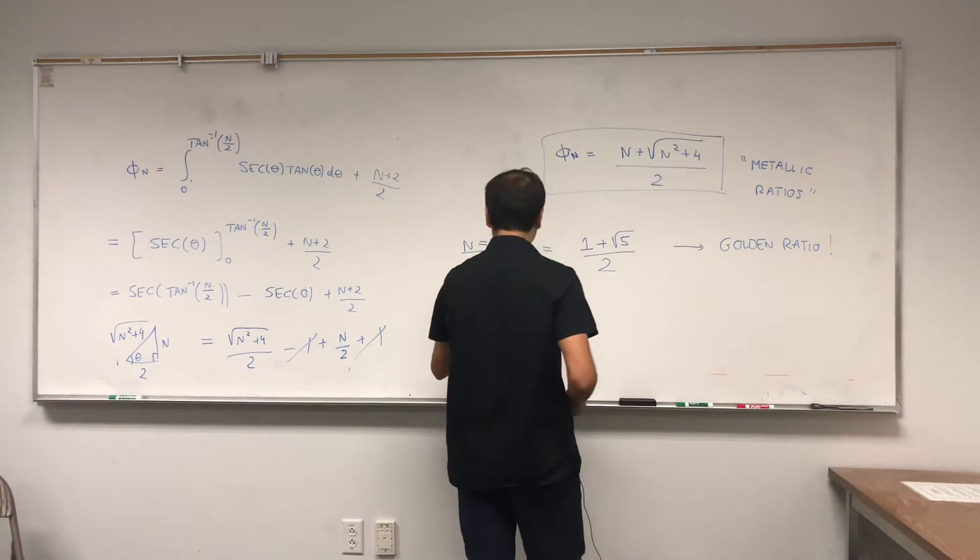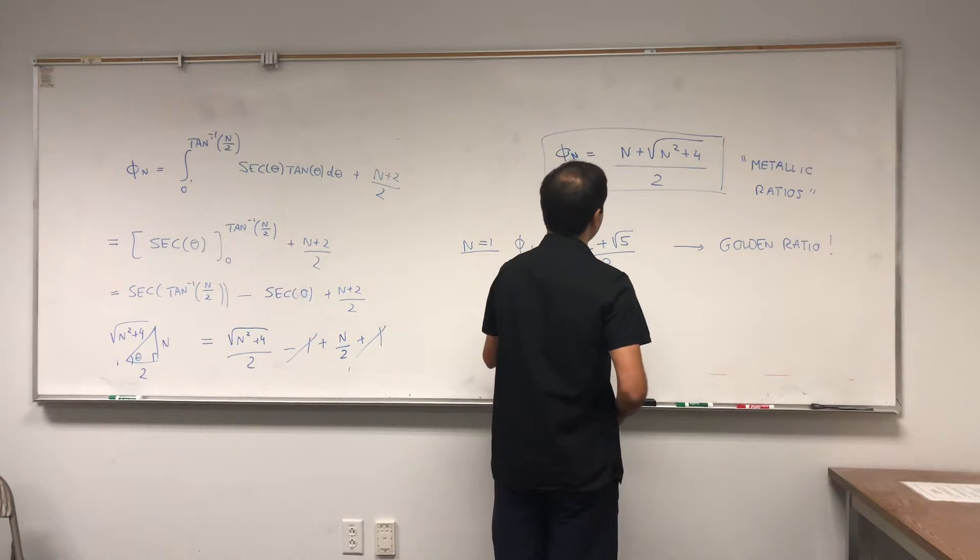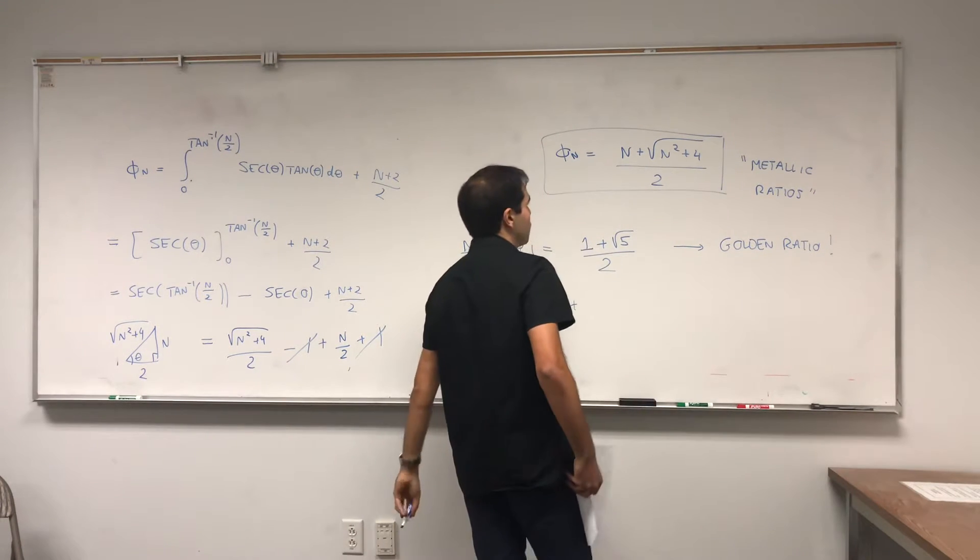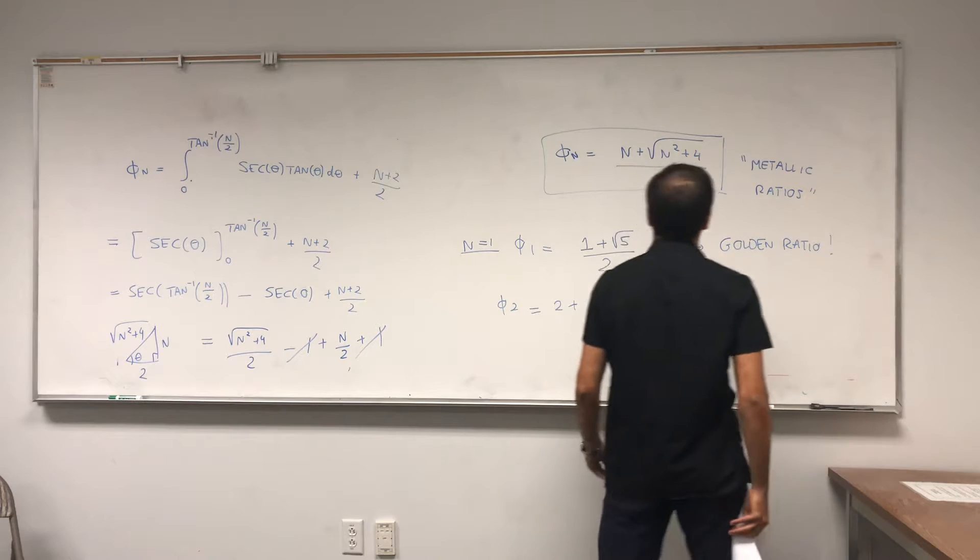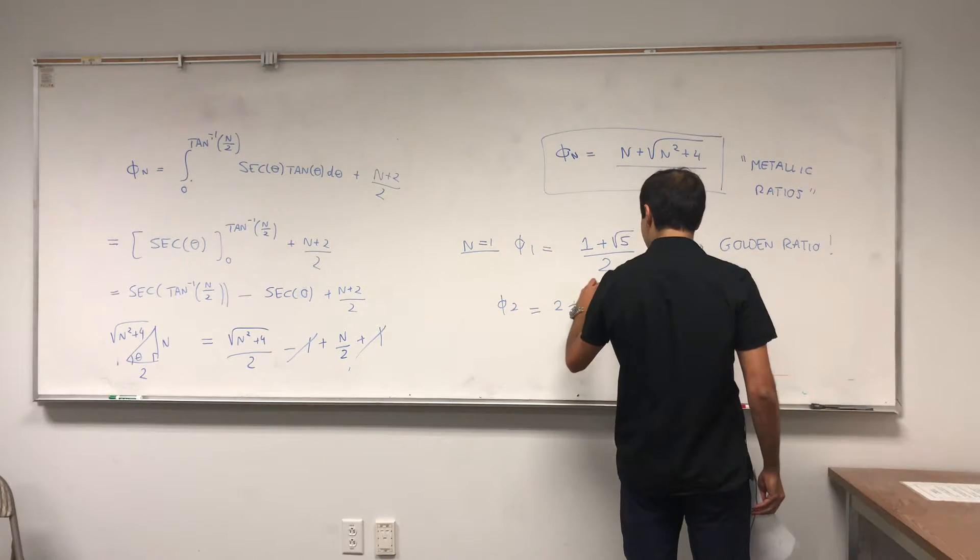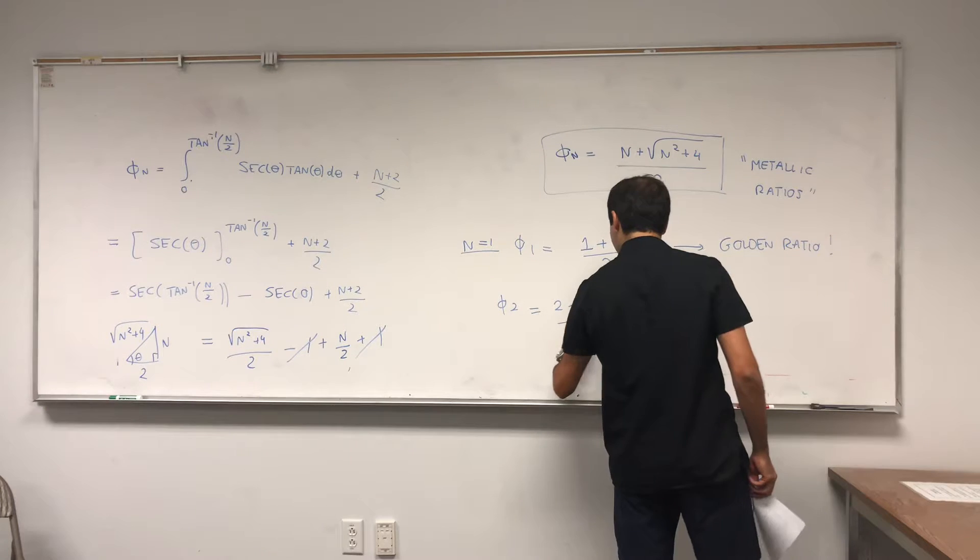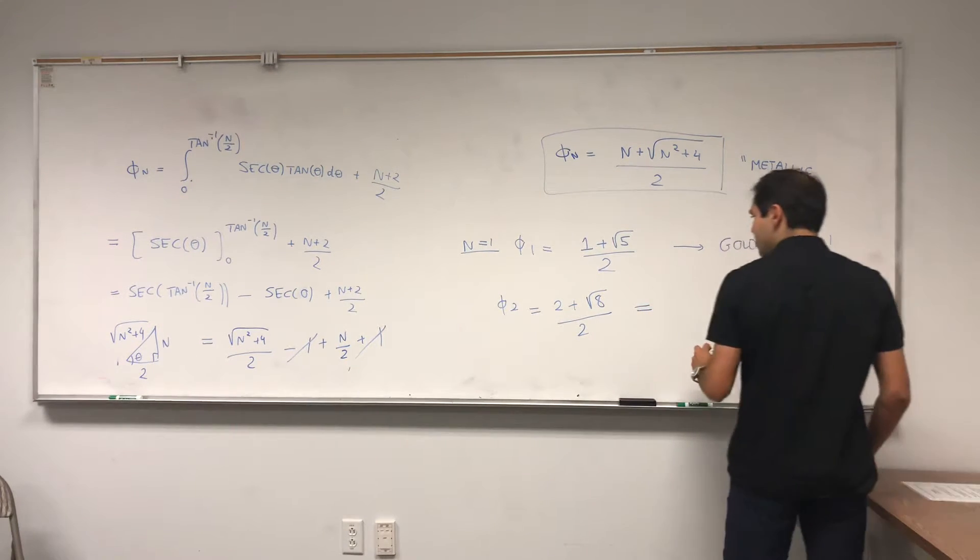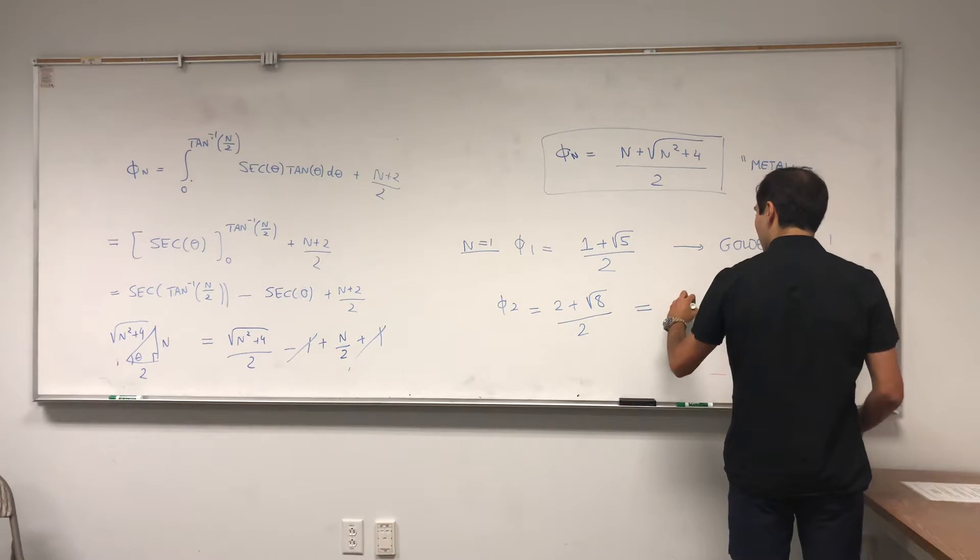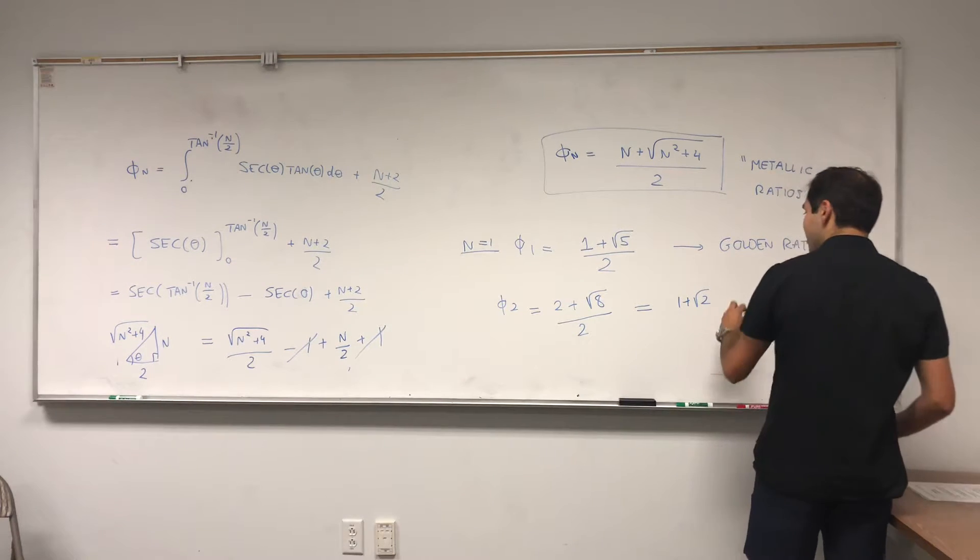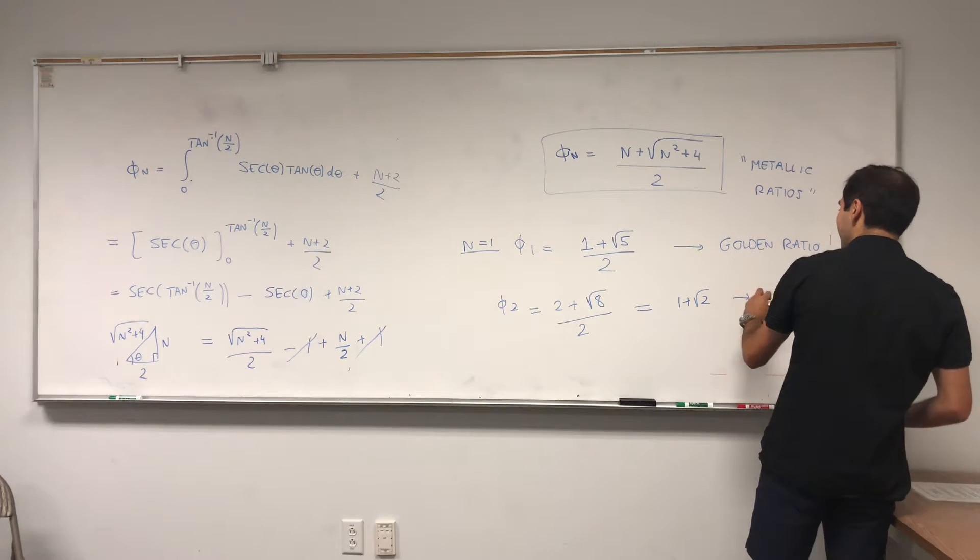And if you do phi 2, that is 2 plus square root of 2 squared plus 4, so 4 plus 4 which is 8. 2 plus square root of 8 over 2, which you can simplify as just 1 plus square root of 2. That's what's called the silver ratio.